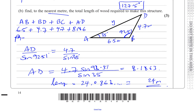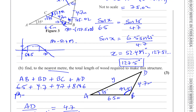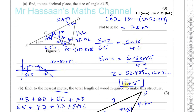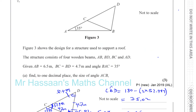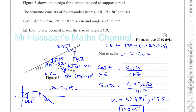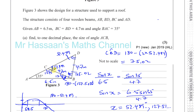So there are our answers to question seven parts A and B. Be very careful with these kinds of questions where you find an angle using the sine rule and the angle is possibly obtuse — the calculator will only give you the acute value, so take great care in those types of questions.